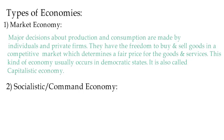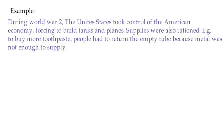The second is the socialistic or command economy, also called a centrally planned economy because it is planned by the central government. Here, the central government controls the entire economy — it decides the allocation of resources and the prices for goods and services. For example, during World War II the United States largely took control of the American economy, forcing businesses to build tanks and planes. Supplies were also rationed — for example, to buy more toothpaste, people had to return the empty tube because metal was not enough to supply.